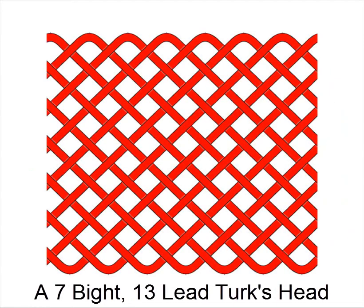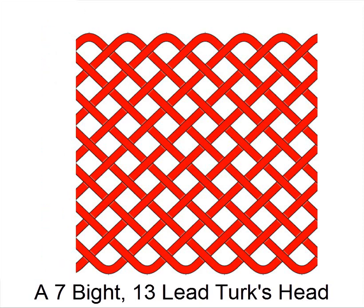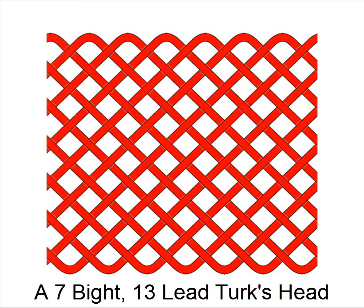One more example. A 7-bite, 13-lead Turks' head. There are the 7 bites. And if we cut vertically, I think you'll find, if you count, there are 13 leads, or 13 parts. I hope that's helped you understand what we mean by bites and parts, or bites and leads.